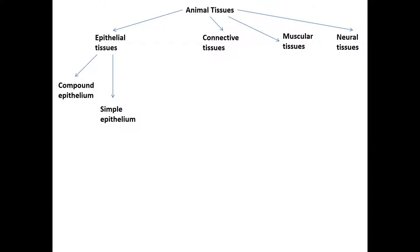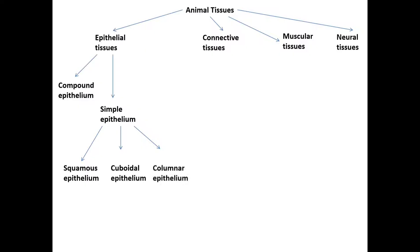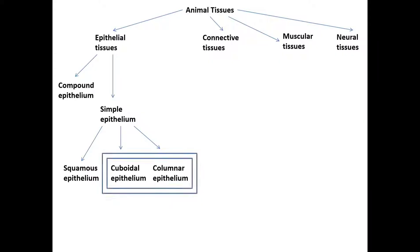Simple epithelium is further divided into three types. Flat shape is Squamous epithelium. Cuboid shape is Cuboidal epithelium. Column shape is Columnar epithelium. There are some specializations of Cuboidal epithelium and Columnar epithelium — there are air-like projections called cilia, and all such tissues are called Ciliated epithelium.